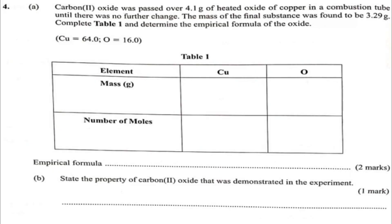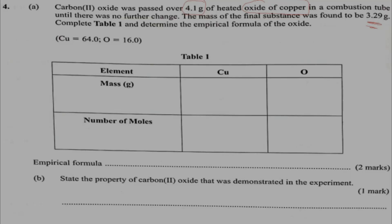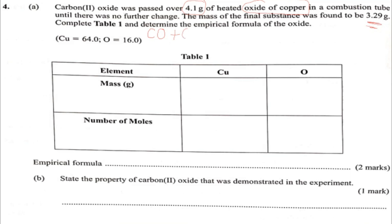The next question: 4.1 grams of copper 2 oxide is heated in a combustion tube. Until there was no further change, the mass of the final product was found to be 3.29 grams. The reaction that occurs is: carbon reacts with copper 2 oxide, which is a redox reaction where copper 2 oxide is reduced to copper, giving copper plus CO2 gas. The initial mass of copper 2 oxide was 4.1 g; since gas escapes, the remaining mass is that of copper, which is 3.29 g.